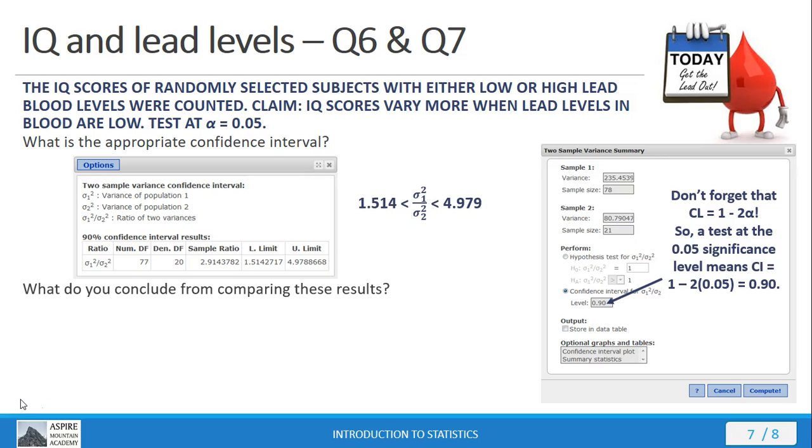Next, we're asked, what do you conclude from comparing these results? Well, the number we're looking for, again, is 1. So is 1 inside or outside the confidence interval?